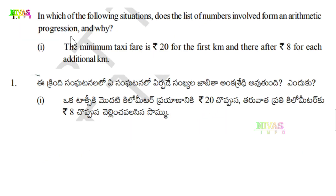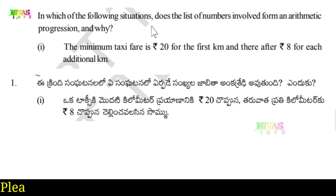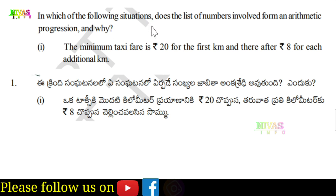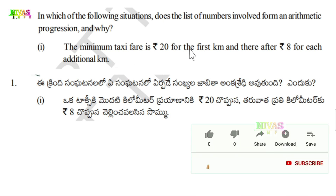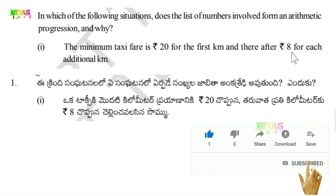Question number 1: In which of the following situations does the list of numbers involved form an arithmetic progression and why? The minimum taxi fare is 20 rupees for the first kilometer and thereafter 8 rupees for each additional kilometer.